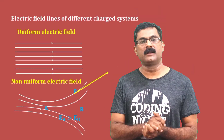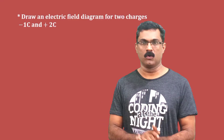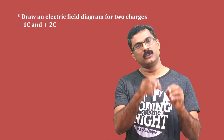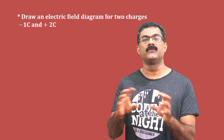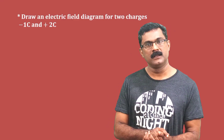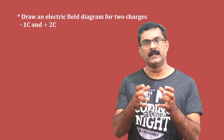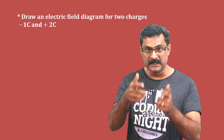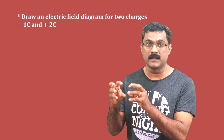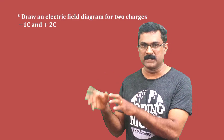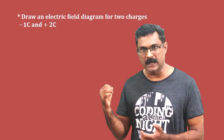Consider the question: draw the electric field lines for charges minus one and plus two. You have two charges, minus one and plus two. The electric field lines start from the positive charge (plus two) and end at the negative charge (minus one).